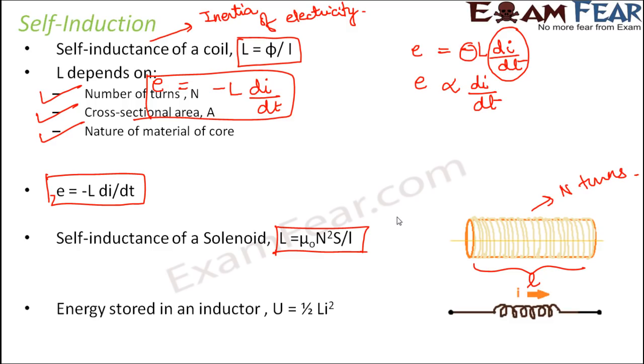Now an inductor also stores energy in its magnetic field. Like when we talk about a capacitor, a capacitor also stores energy in its electric field. Similarly, an inductor stores energy in its magnetic field. And the energy density stored in an inductor is given by half L I squared.